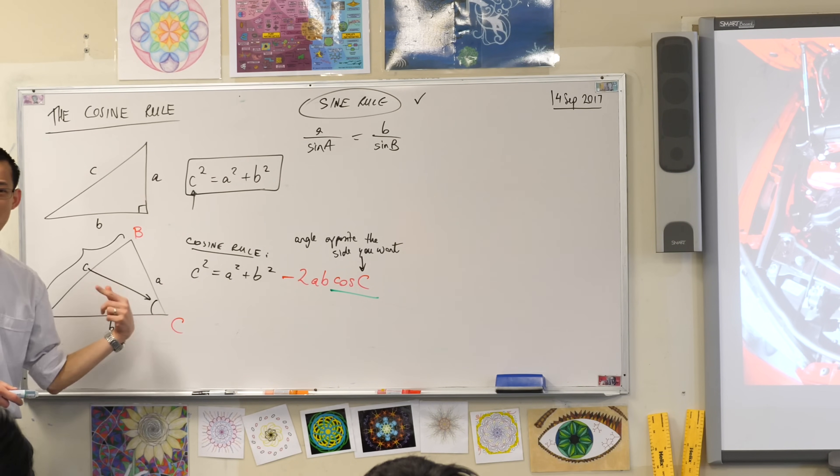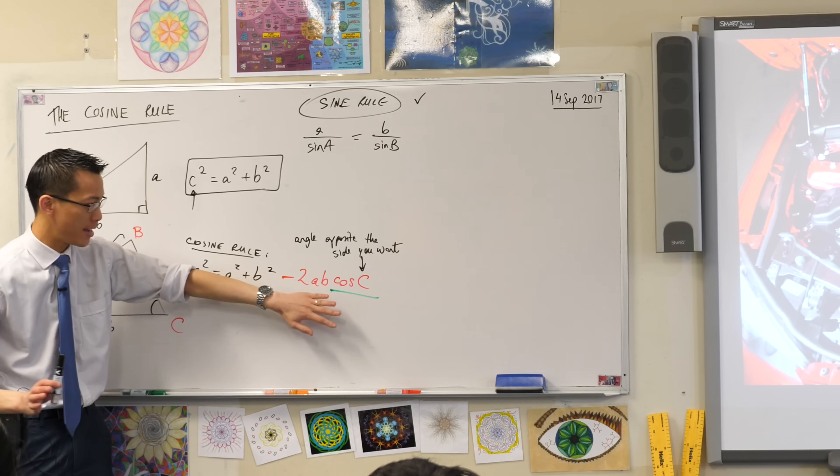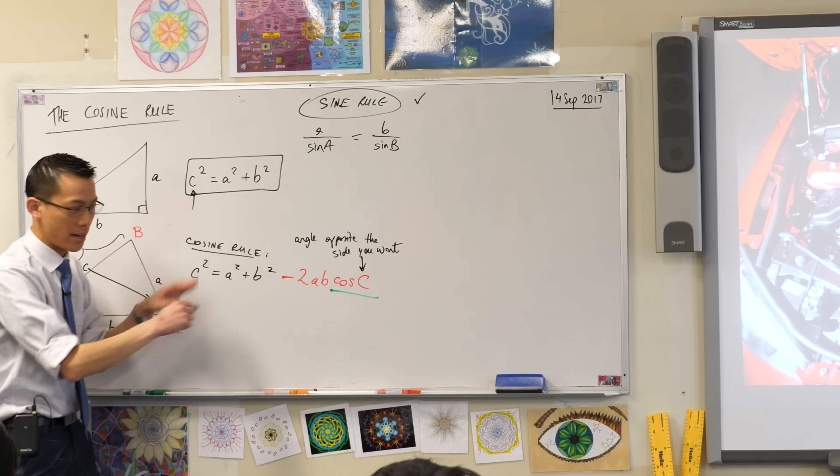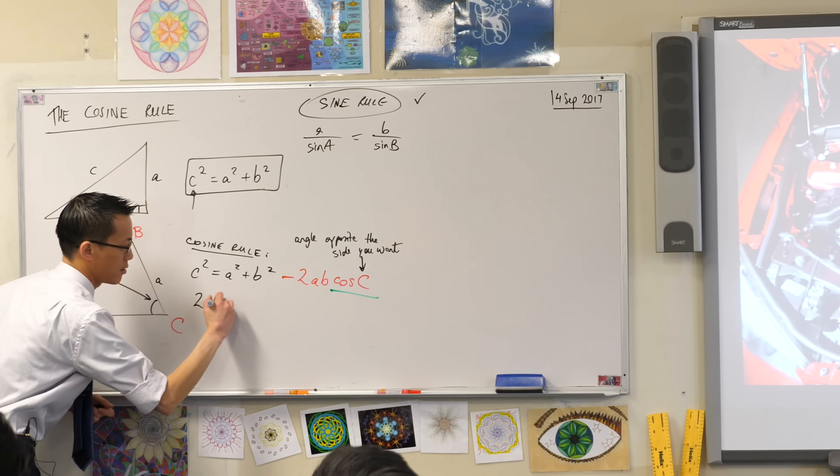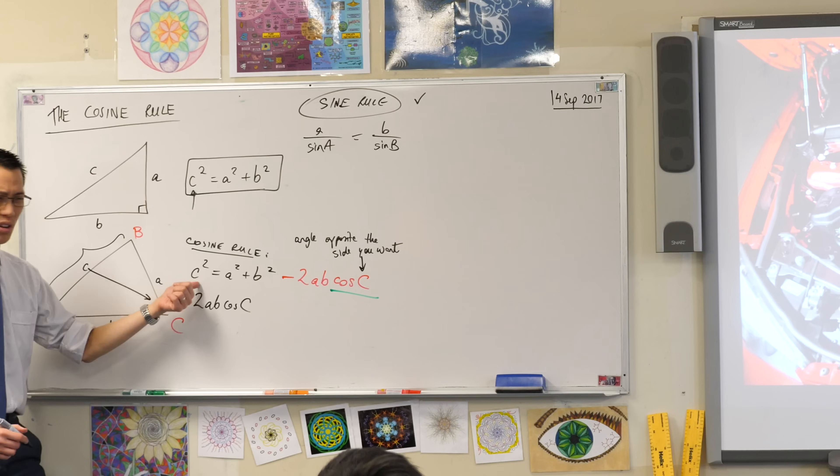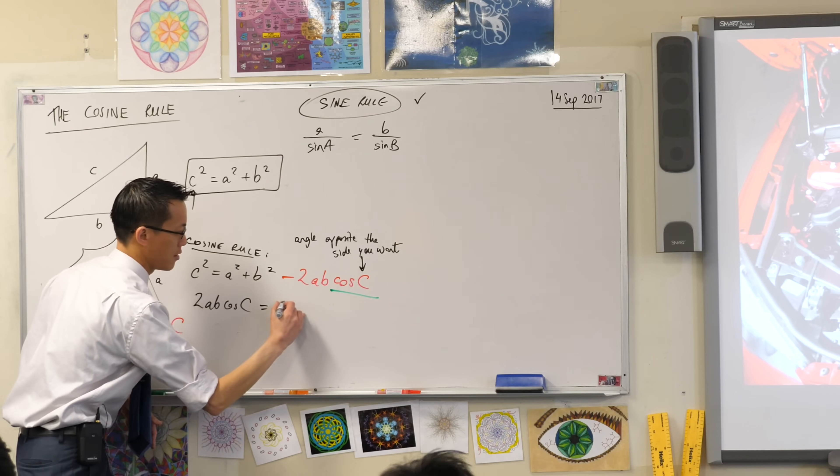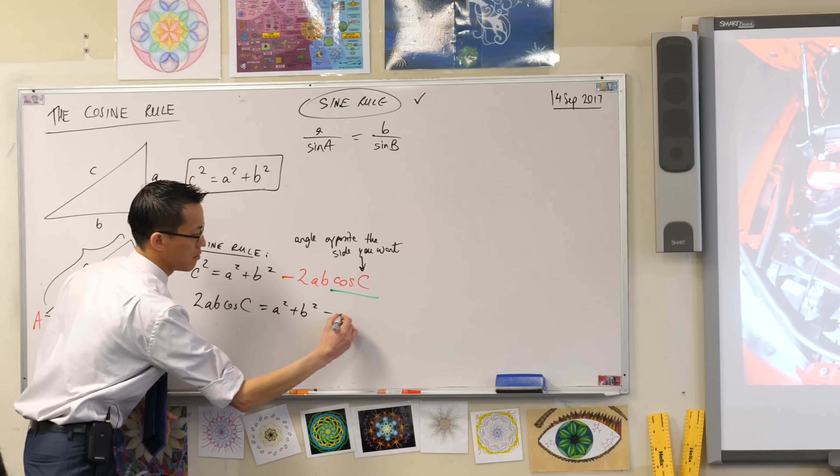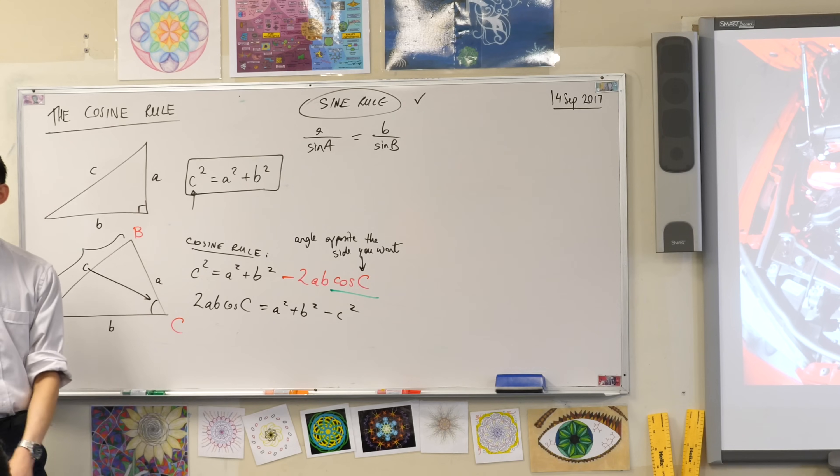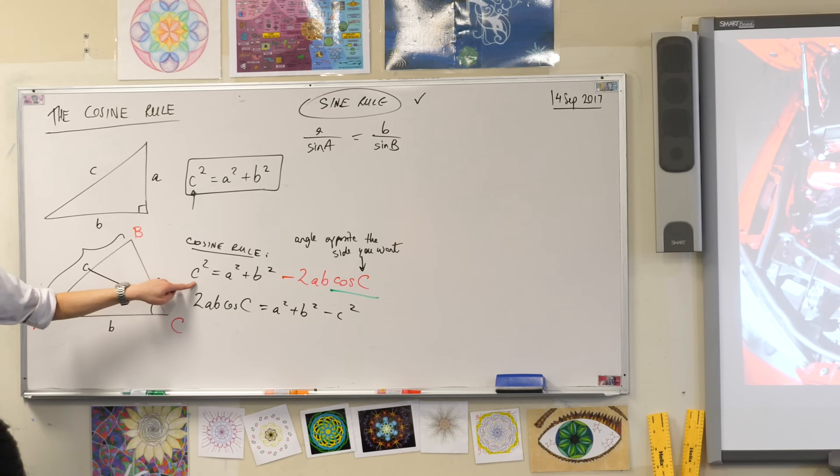So, the first thing I'm going to do is I'm going to get it on the left-hand side. I want the subject on the left-hand side. I'm going to add this weird 2ab cos c thing. I'm going to add it to both sides. So, that leaves me with this on the left. I also don't want this c squared here. So, I'm going to subtract it from both sides. I have added this to both sides. I have subtracted this from both sides.